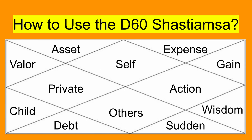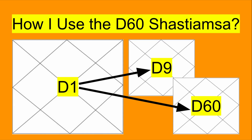How do you really use this D60 chart? There are two ways. The first is to use the chart exactly the way you would use the natal chart — so the first house of the D60 still represents who you are, your physical body, your health. The other method is to use the D60 to verify the results of the planets in the chart. When looking at the natal chart, you want to see the positions of the planets in the D9 and in the D60 as well.